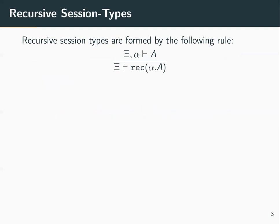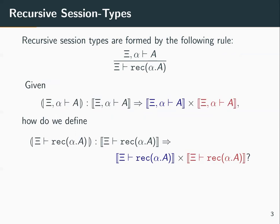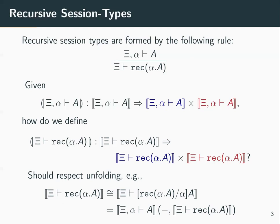Recursive session types are given by the rule on the slide. Our task is, given an interpretation for the premise, to give an interpretation for the recursive session type at the conclusion of the rule. Regardless of how we do so, we'd like for this interpretation to respect the unfolding of recursive types. For example, in the case of the black functor, we'd like the interpretation of the recursive session type to be naturally isomorphic to the interpretation of its unfolding.